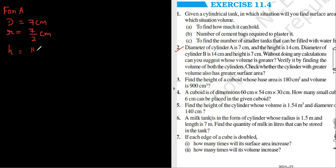Okay, diameter of cylinder B. So let me just write over here, for B: diameter equals 14 centimeters, so radius equals 7 centimeters, and height is 7 centimeters.